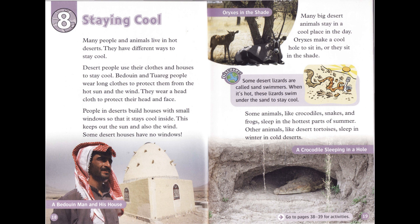Many big desert animals stay in a cool place in the day. Oryxes make a cool hole to sit in, or they sit in the shade. Discover: Some desert lizards are called sand swimmers — when it's hot, these lizards swim under the sand to stay cool. Some animals, like crocodiles, snakes, and frogs, sleep in the hottest parts of summer. Other animals, like desert tortoises, sleep in winter in cold deserts.